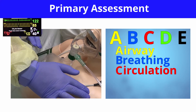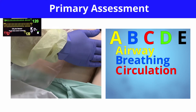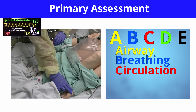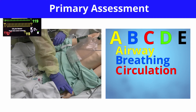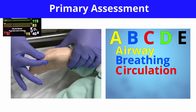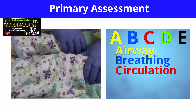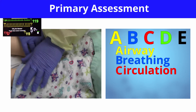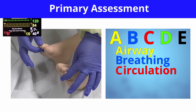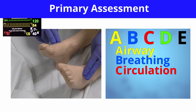Circulation: the child is pale with pink lips. Central and peripheral pulses are strong and the capillary refill time is two seconds. The child is mildly tachycardic at 100 beats per minute and his blood pressure is within normal limits for his age.